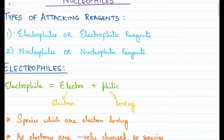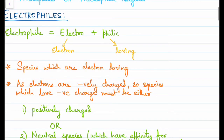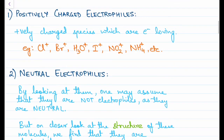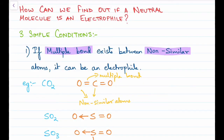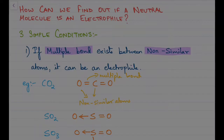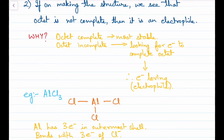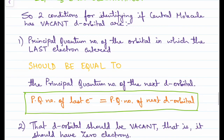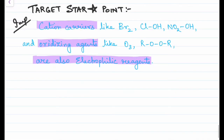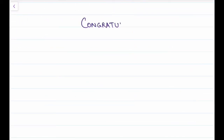Quick revision: there are two types of attacking reagents — electrophiles and nucleophiles. Electrophiles are electron-loving and can be positively charged or neutral species. Positively charged electrophiles are easy to identify. For neutral species, use three conditions: (1) multiple bond between non-similar atoms, (2) incomplete octet, or (3) complete octet but central atom has vacant d orbitals. Congratulations — lesson complete!